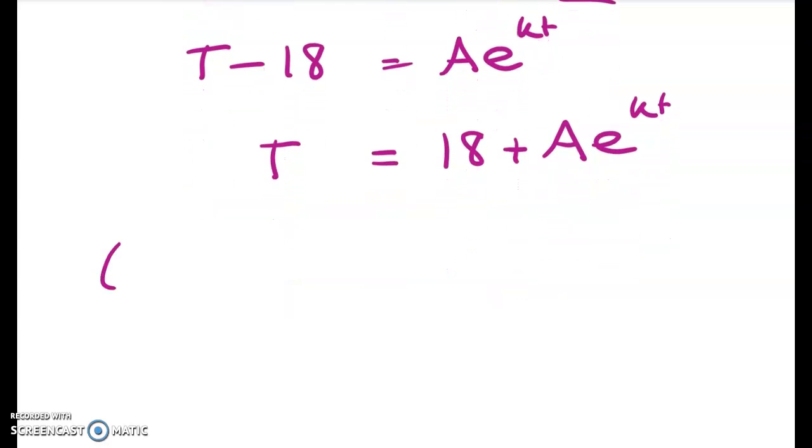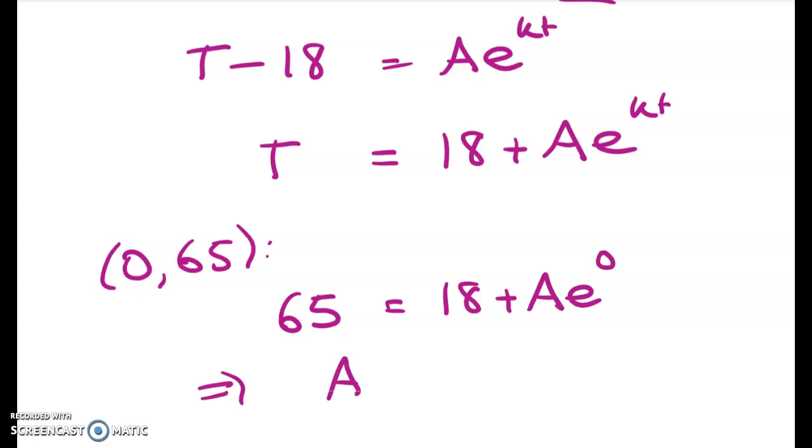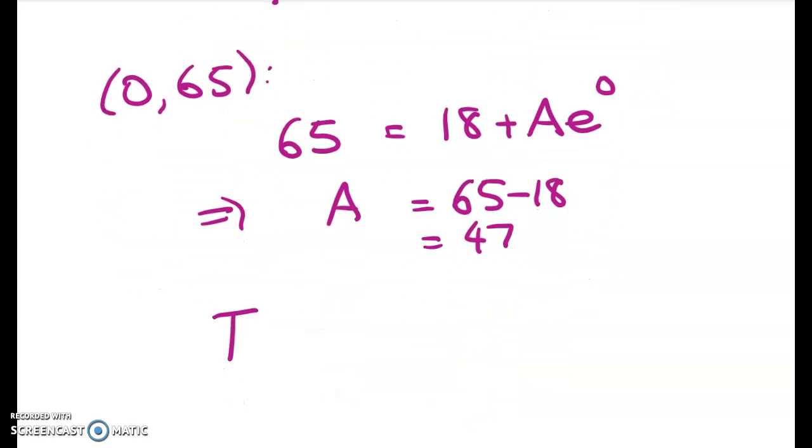So we know that (0, 65) is a point on the curve. So 65 is equal to 18 plus A times e to the 0. So A must equal 65 minus 18, which is 47. Writing that back in gives me this.